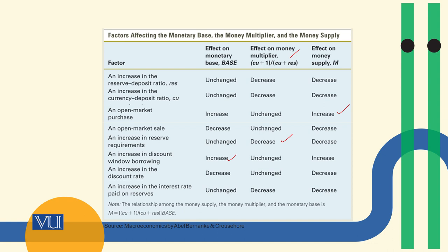So today we have seen which factors determine money supply. We talked about three factors: money supply is determined by the product of the money multiplier and the monetary base. Monetary policy can change the monetary base or the money multiplier, and through these channels change the money supply. Thank you.